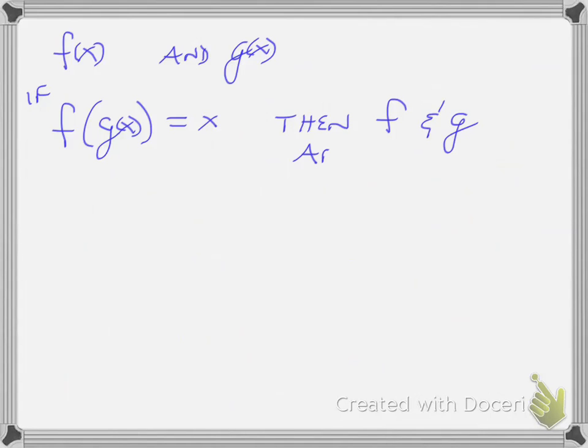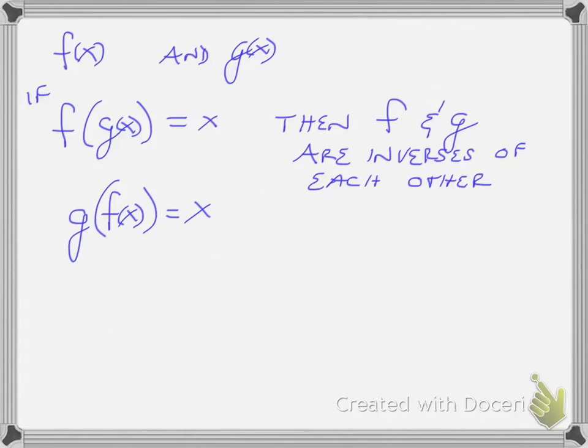If you have two functions, f of x and g of x, just like you did in the last assignment, if you find f of g of x and that's equal to x, then f and g are inverses of each other. It goes both ways, so it also works if you do g of f of x and that should equal x as well. If it doesn't, then they're not inverses.